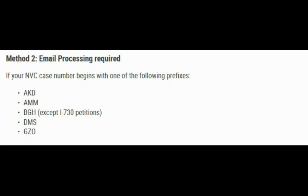Now, which category of applicant uses Method 2? Method 2 is email processing. If your case number begins with one of these prefixes — AKD, AMM, BGH, or if you have an I-730 petition, DMS, GZO — then you will email your documents to NVC.